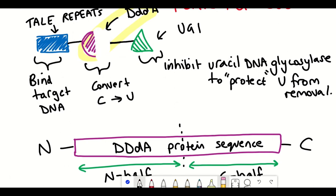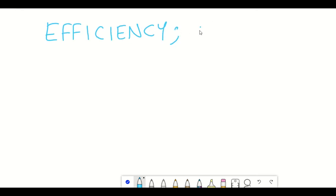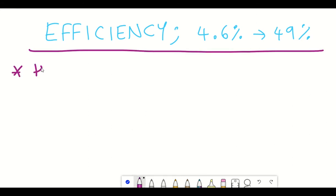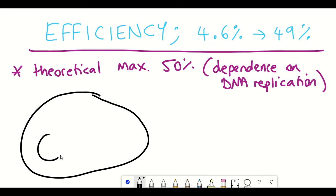However, what about the efficiency? Well, this was also tested by the team and was promising. They saw a variety of different efficiency levels, mainly due to the different variables as I've already listed, but they saw efficiency levels range from 4.6% up to 49%. And so that's pretty good considering that the theoretical maximum would be around 50% because the editing conversion depends on this uracil being changed to thymine during DNA replication. And there's a 50-50 chance that it would go the other way, hence the 50%.